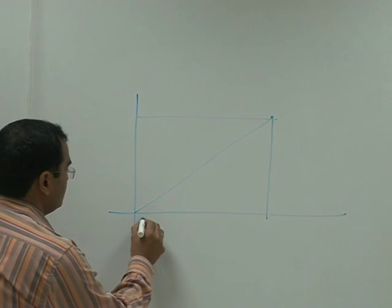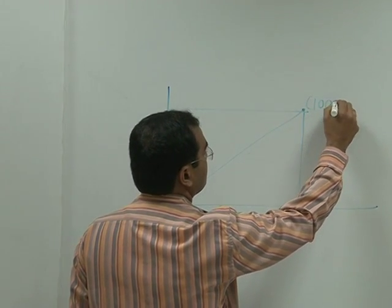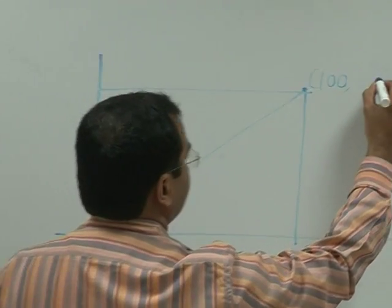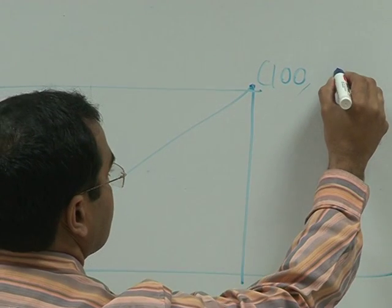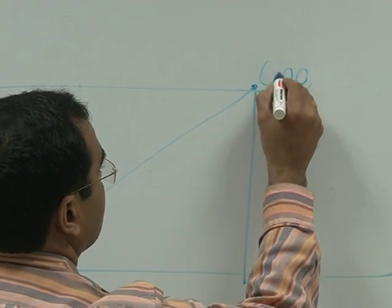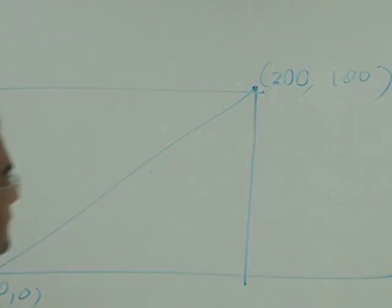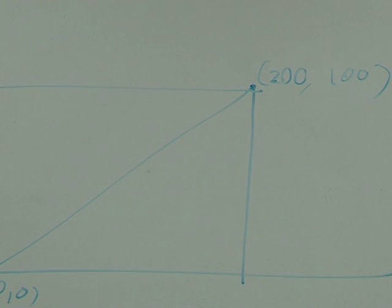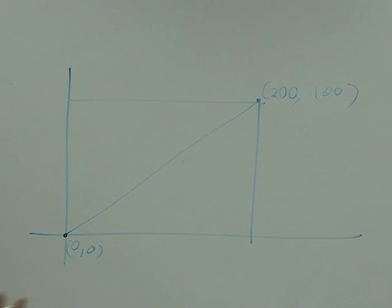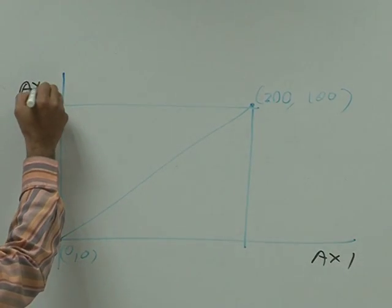This is 0,0, say this is 100mm and this is 200 and 100mm, so this is my starting condition. This is my axis 1, this is axis 2.